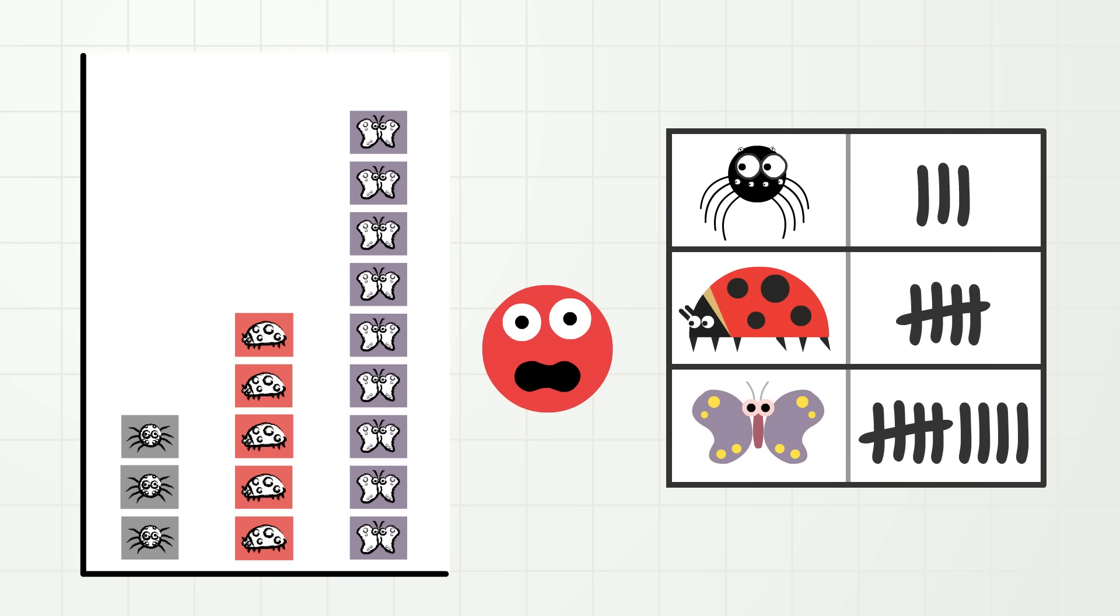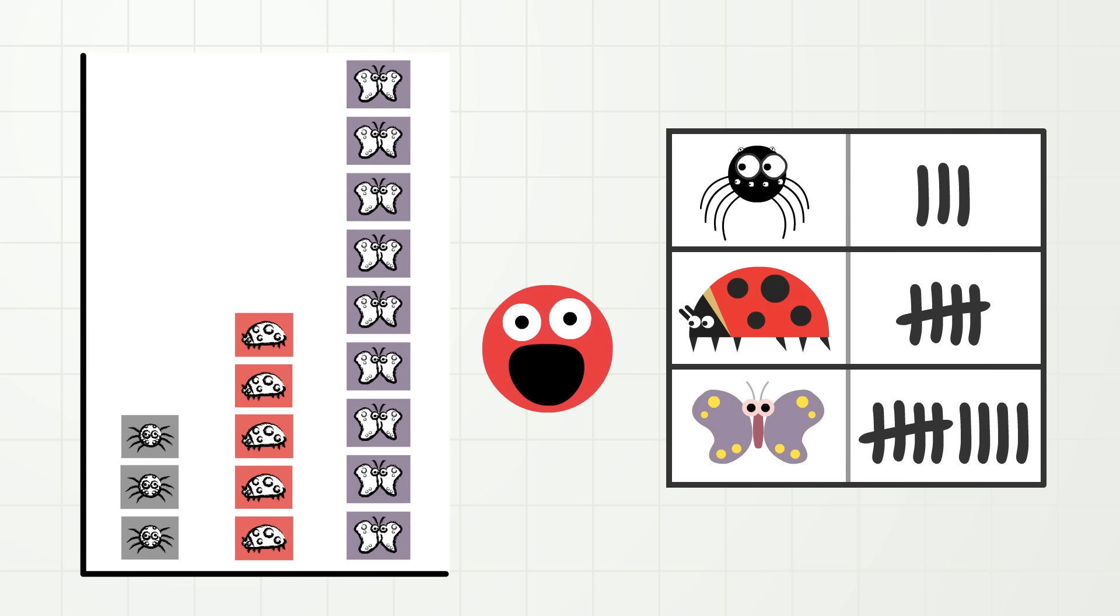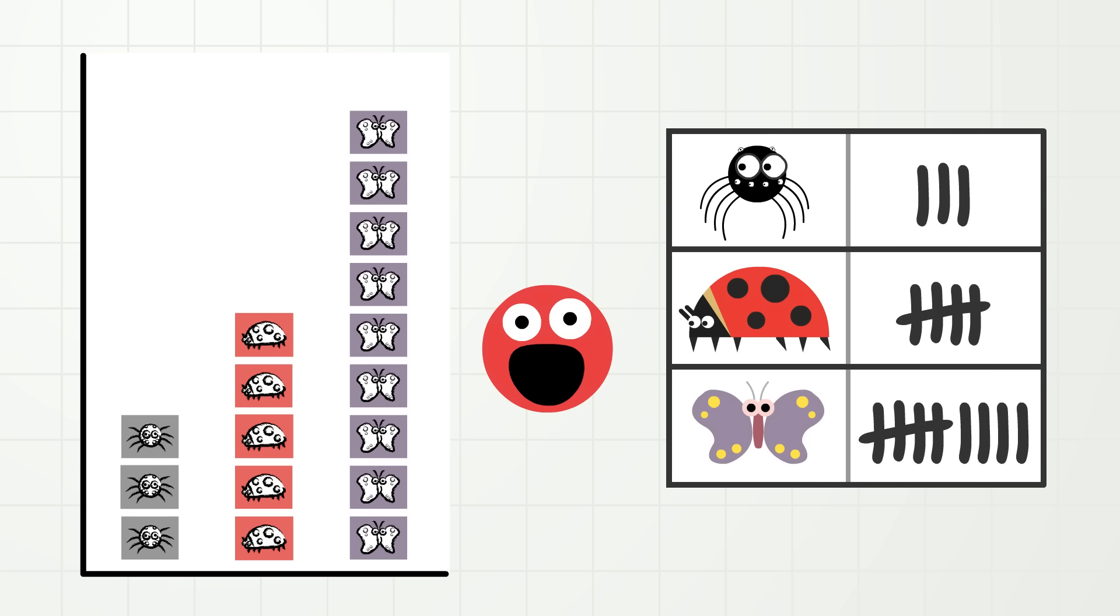So, looking at the pictograph data, which bug do most of my brothers and sisters like the best? That's right, it's a butterfly! Yay! There are more butterfly pictures than anything else, so we have learned that among my brothers and sisters, the most popular bug is the butterfly!